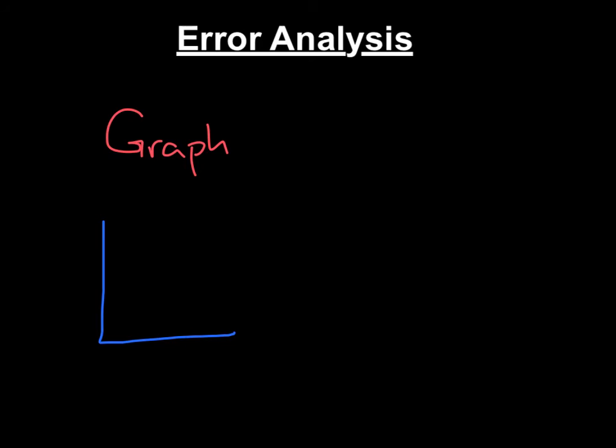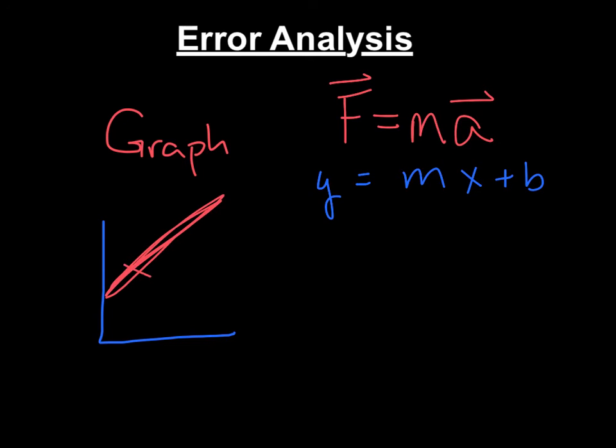So if we're graphing, if we say, well, we know that Newton's second law, F equals mass times acceleration. Huh. So let's compare this to y equals mx plus b. You will get a graph. Hopefully it looks somewhat like a straight line when you graph your average quantities. Hmm. So what should y be? Well, y matches up with force.